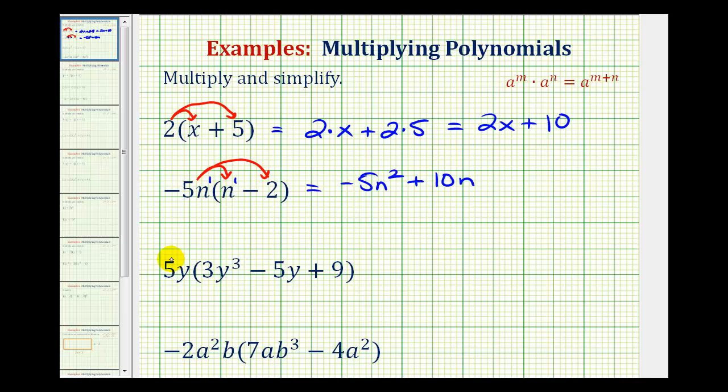In the third example, we have a monomial times a trinomial, so we're going to distribute and have three products. Five y times 3y³, remember this y is to the first power, so we're going to have 15y⁴.